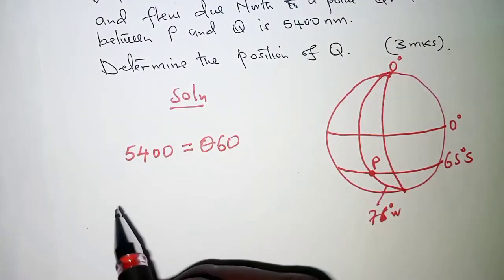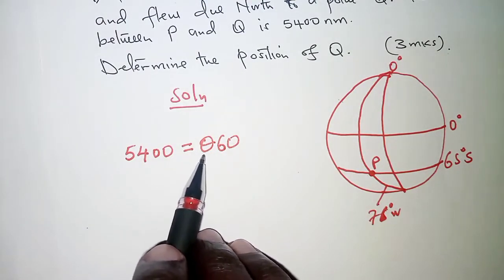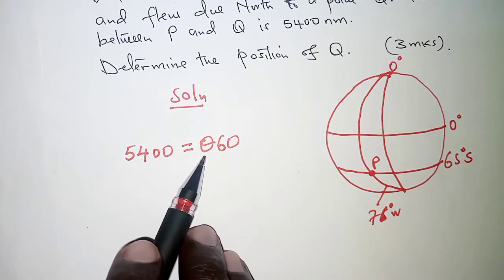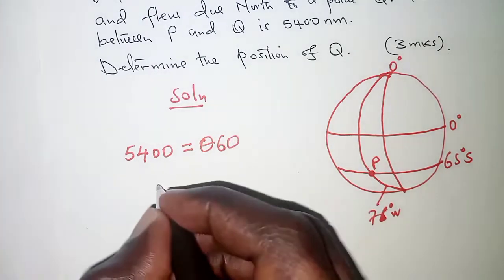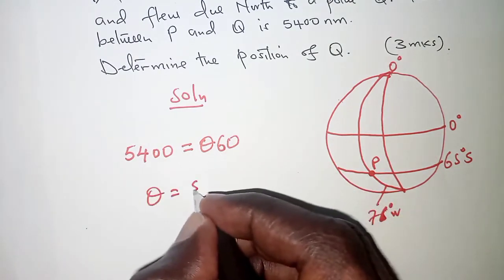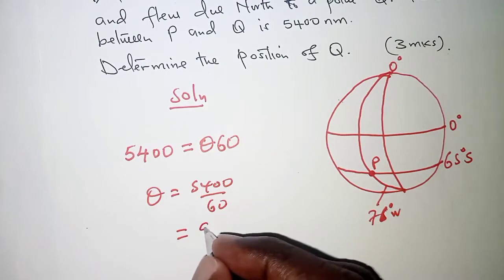Remember, distance along a great circle in nautical miles is given by theta times 60, where theta is the angle difference that is between point P and Q. Dividing both sides by 60, that should give us 90 degrees.